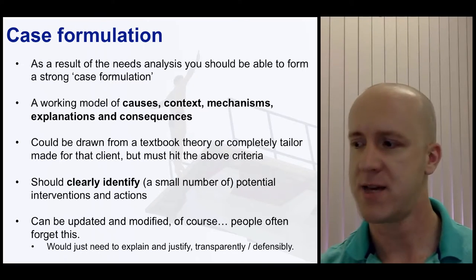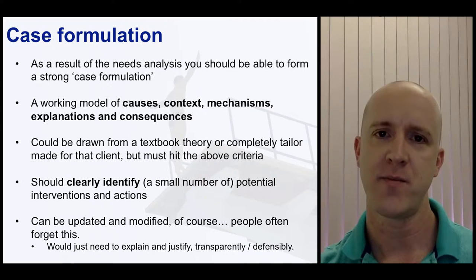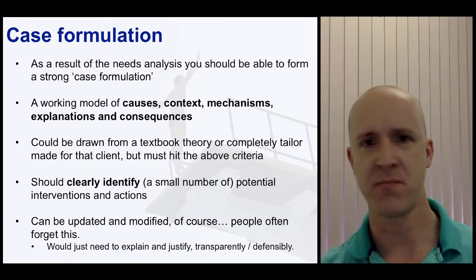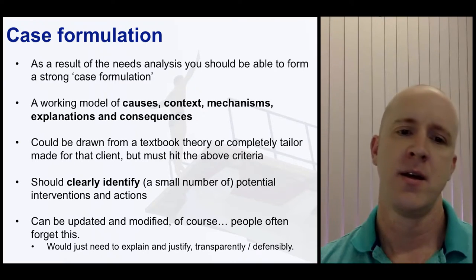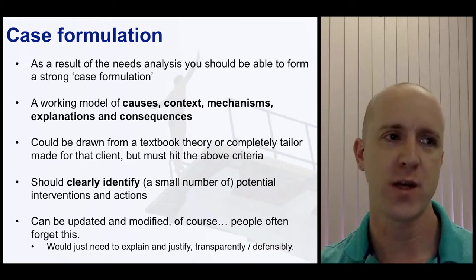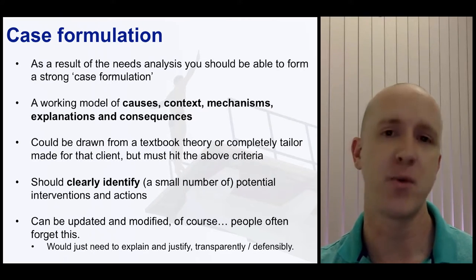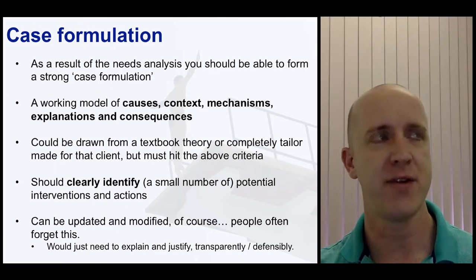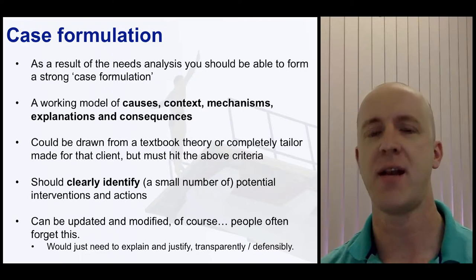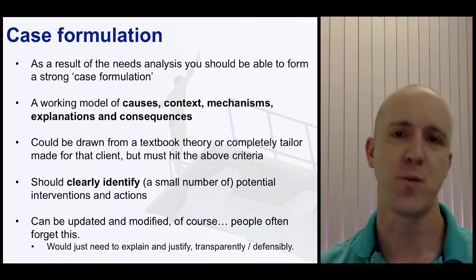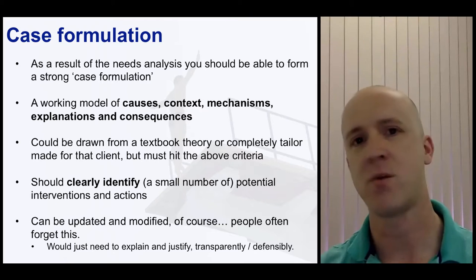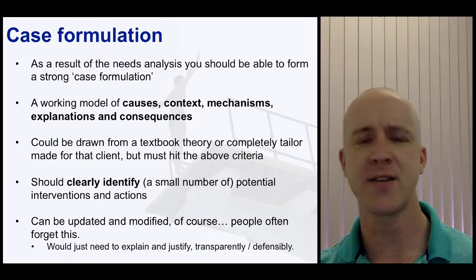The case formulation should, if it's doing its job, point out a small number of potential ways forward. I've had students correctly point out that in sports psychology, some of our best theories enable almost any outcome. You give a detailed fake client, apply a particular theory, and it leaves you with almost any of the popular approaches — imagery, goal setting, self-talk — and you could change the theory and still end up with the same potential courses of action. That's probably a problem. It might be that our theories are faulty, and if we're just using them to case formulate, we haven't got the level of precision we need.